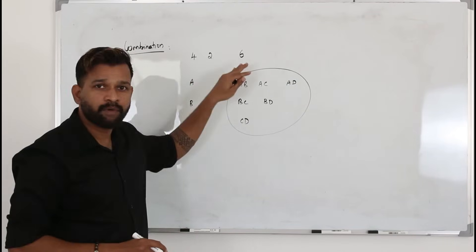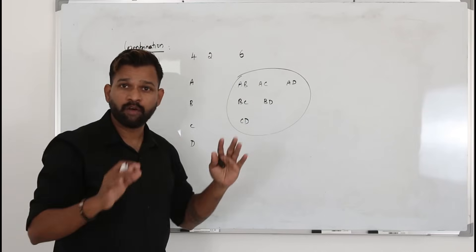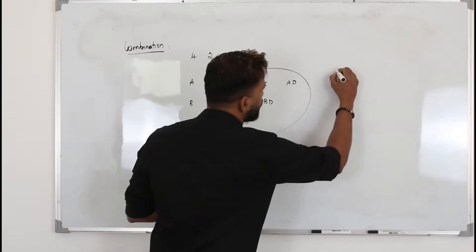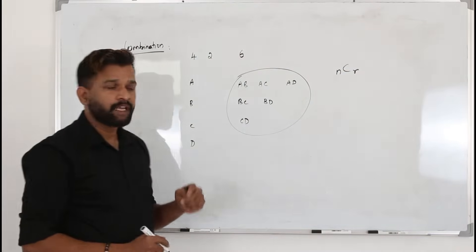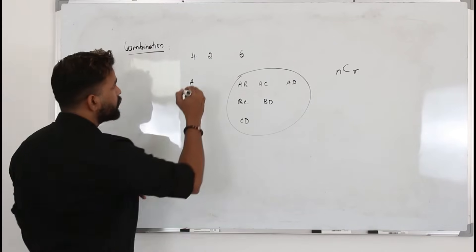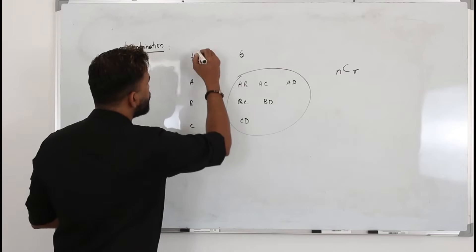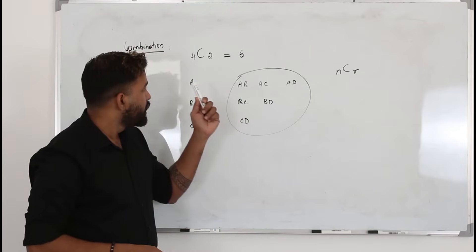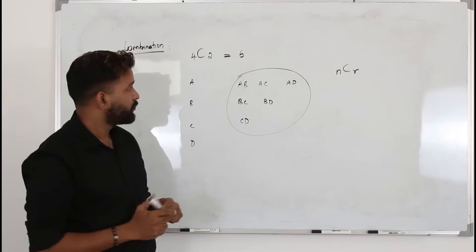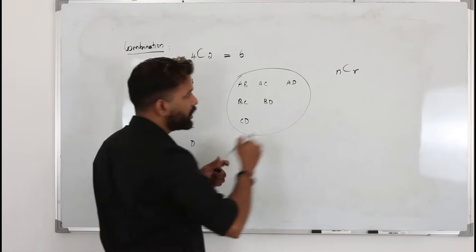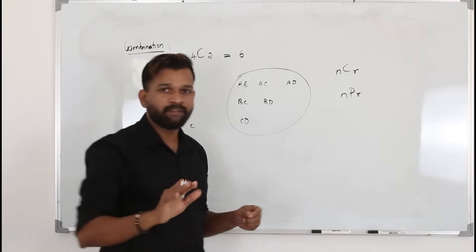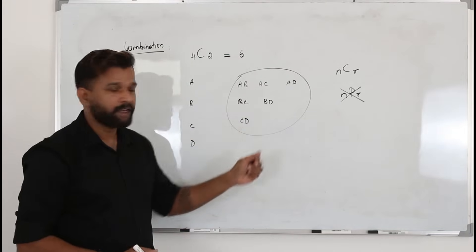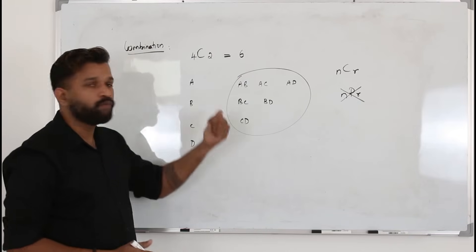When it comes to bigger numbers it is highly impossible to list all combinations, so that's where the combination formula comes in. On your calculator, look for the NCR button. Type 4, press NCR, type 2, press equals, and you get 6. This is called combination. Here, the order doesn't matter — AB is the same as BA. If order did matter, that would be permutation, NPR, which is not in our syllabus. What we are learning is only NCR, where order doesn't matter.